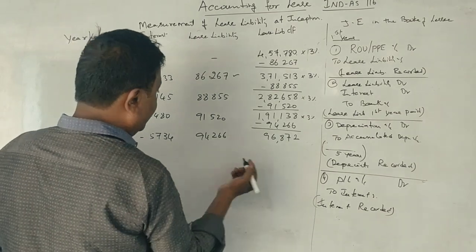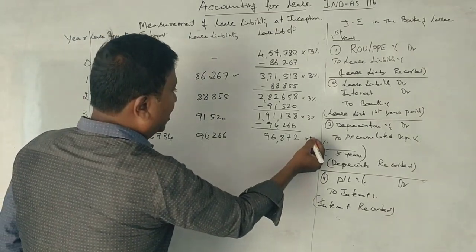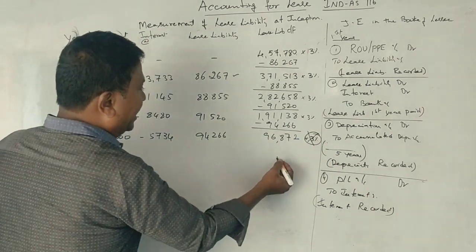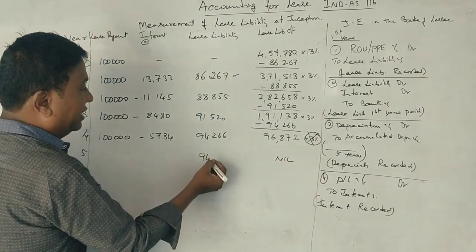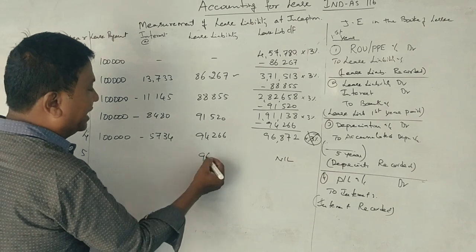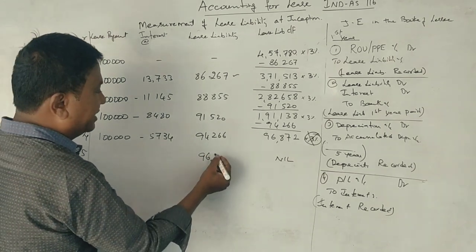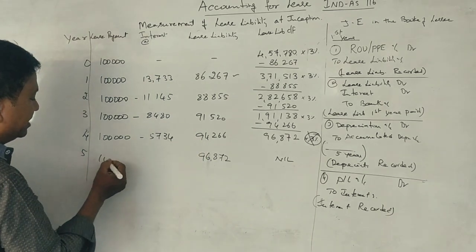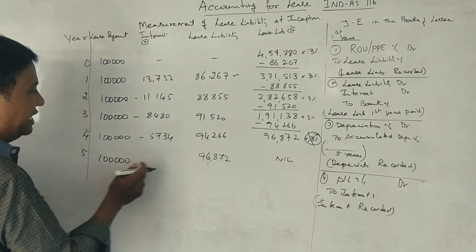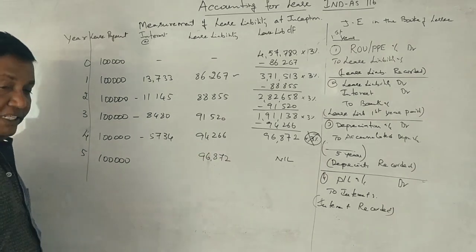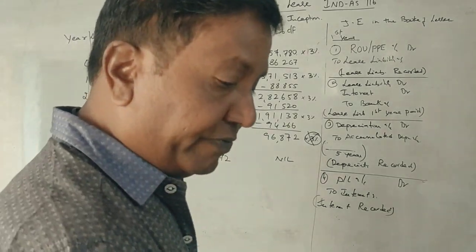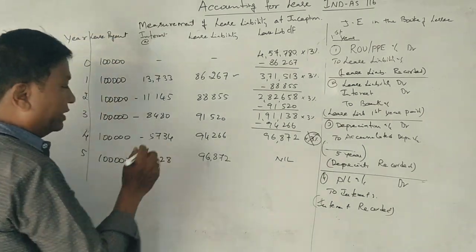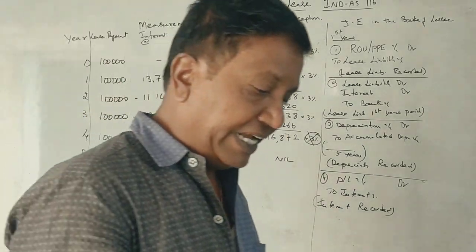The fourth year: 3% interest on 96,872 equals 2,906 Rs. Fourth year lease liability minus 96,872 equals 3,128 Rs.